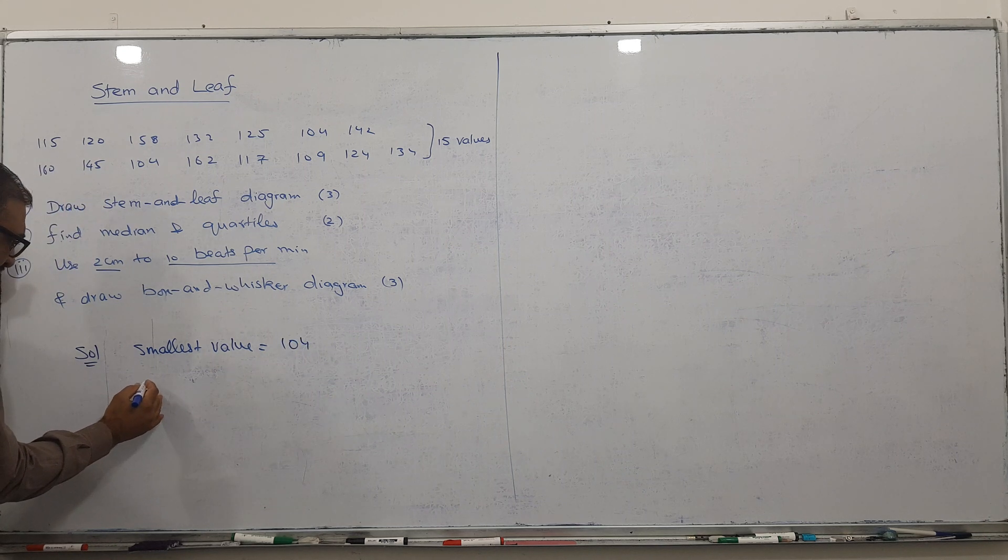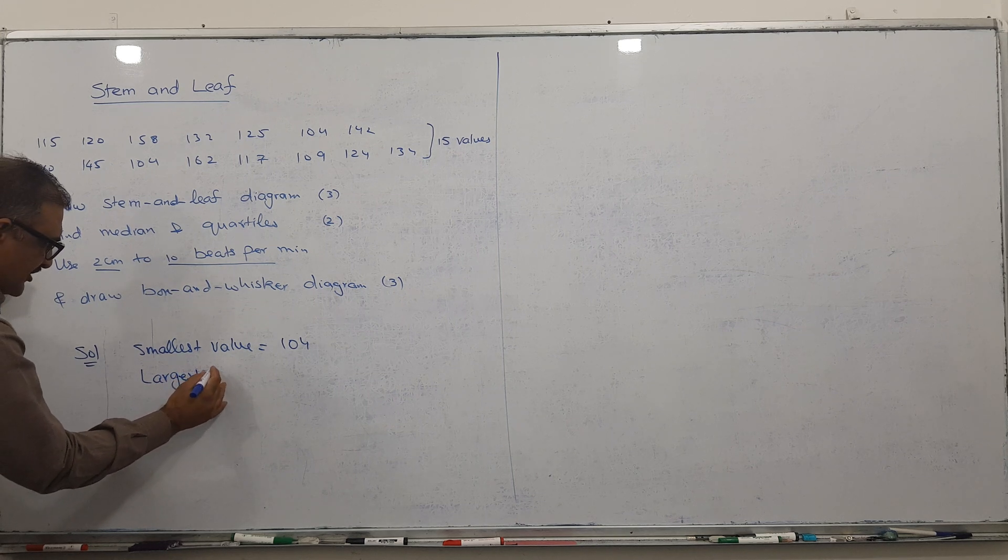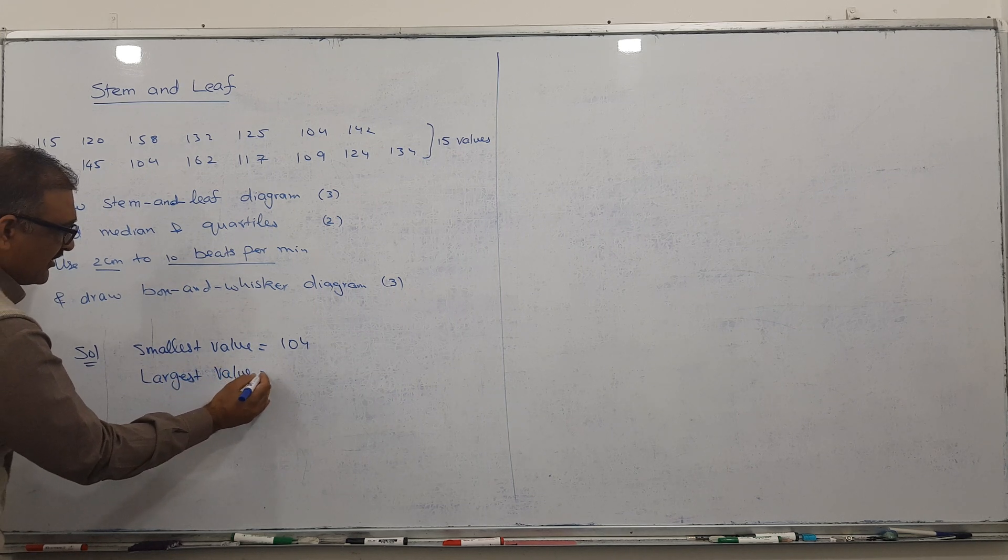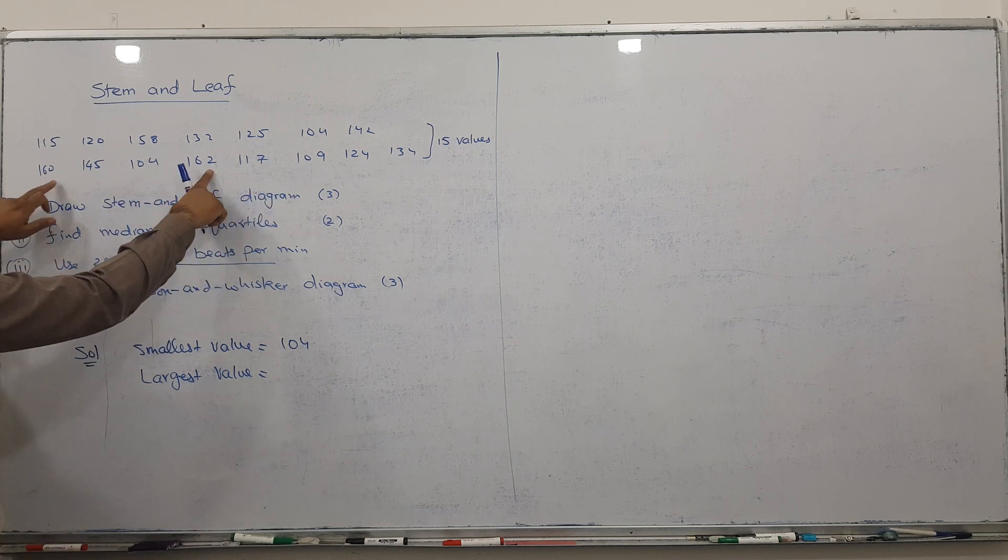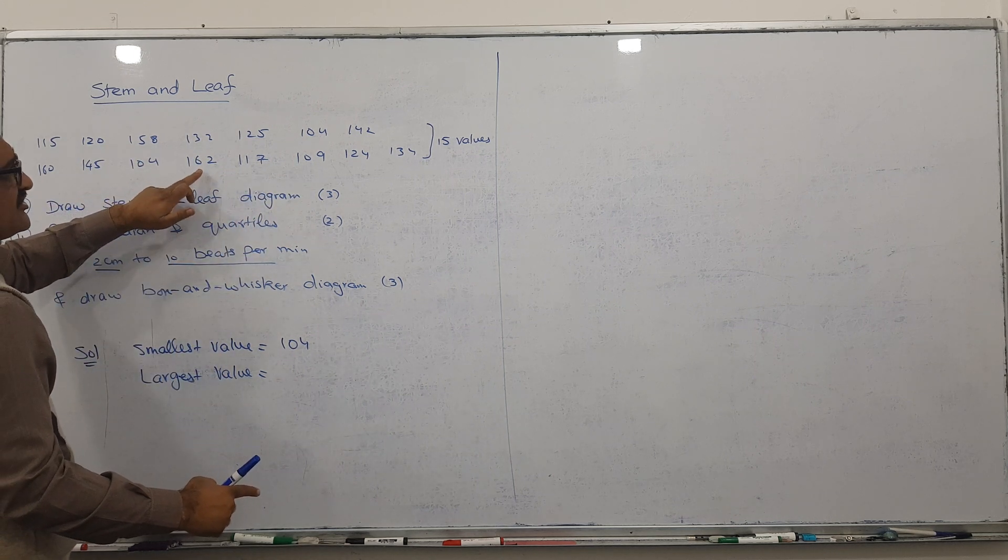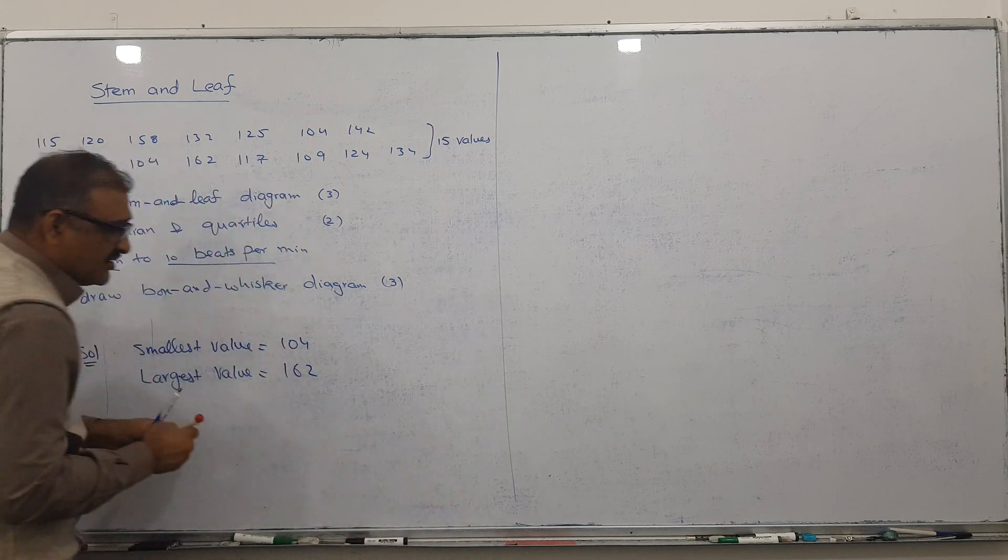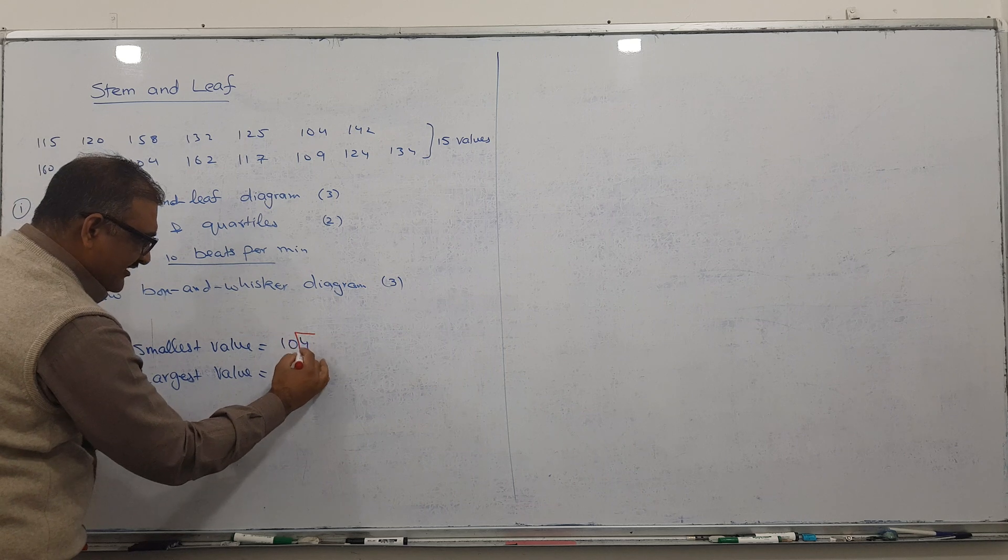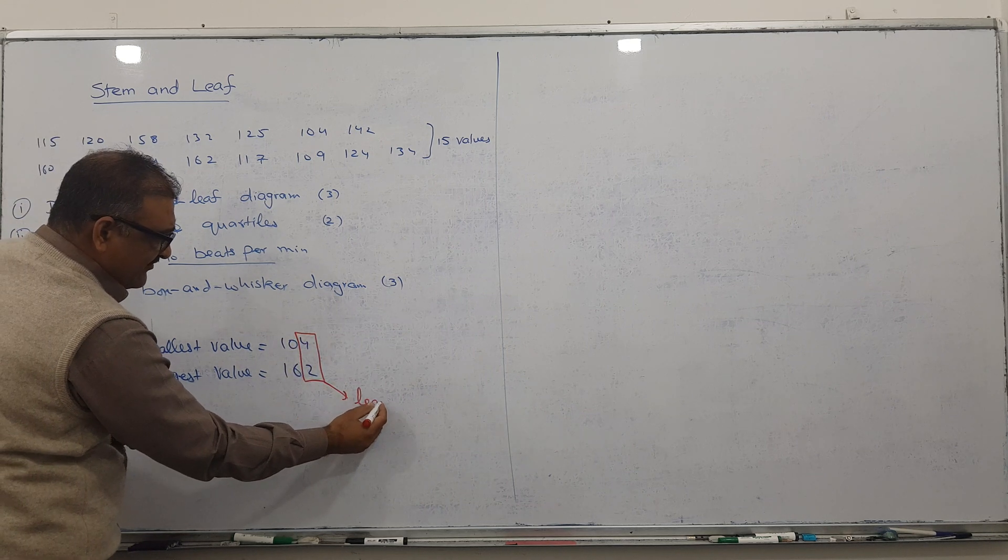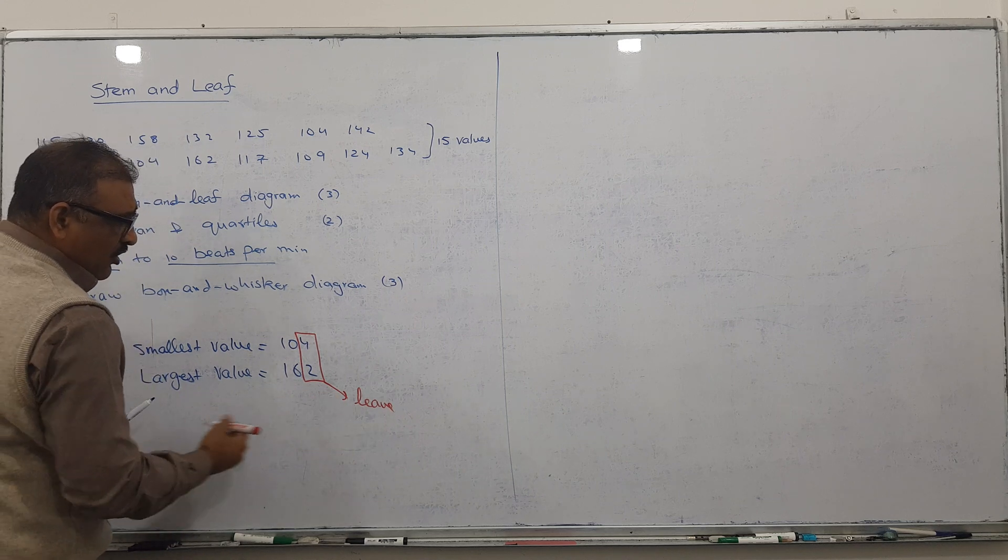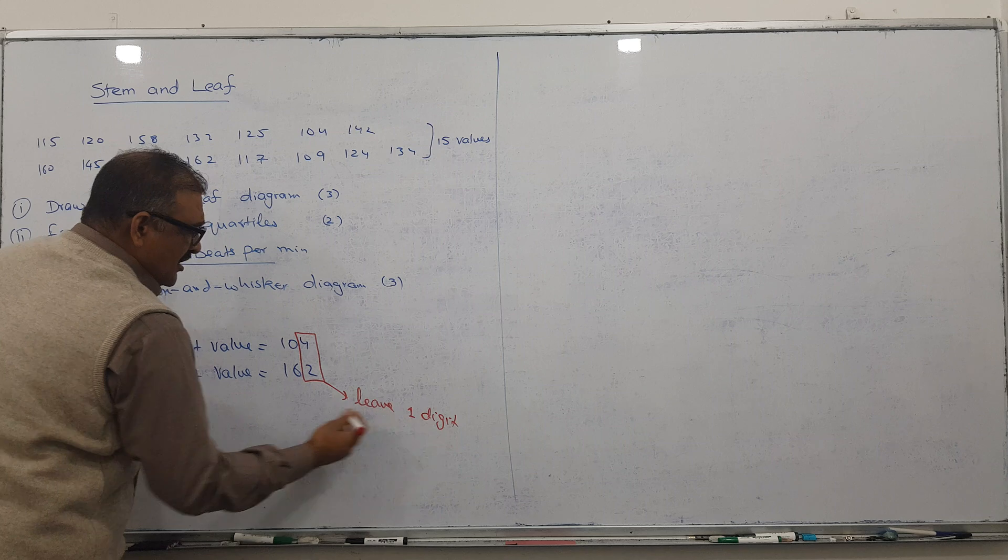And the largest value is very clear here: 158, 160, 162. I think 162, yes, 162. And what is the method? Leave one digit from the right-hand side. Leave one digit only, always one digit, please. Always one digit, not two digits.